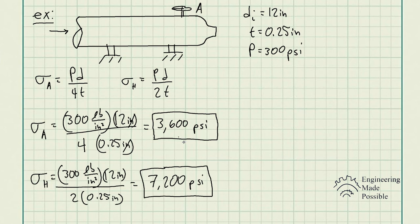This confirms that we always design pressure vessels based on the worst-case scenario — the highest stress. If you designed only for the longitudinal stress of 3,600 psi, the vessel could still fail because the same pressure produces twice that stress in the hoop direction. Therefore, we always design using the hoop stress for cylindrical pressure vessels.